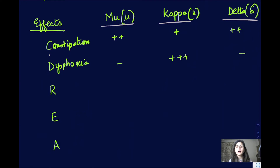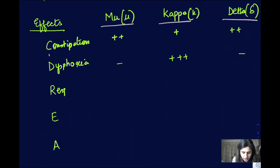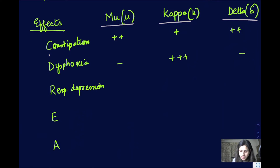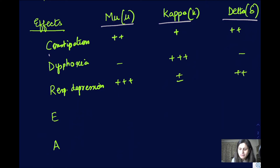R stands for respiratory depression. Opioids are notorious for causing respiratory depression. This respiratory depression is mainly because of action on the mu receptors — it is seen somewhat with delta as well, but primarily it is due to the mu receptors.